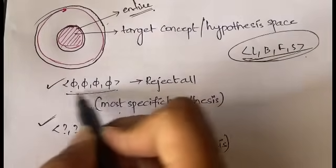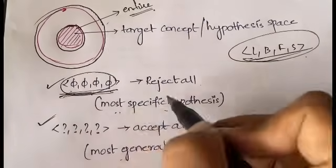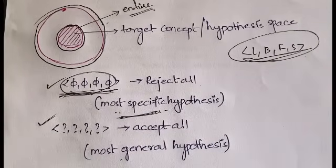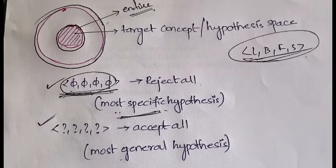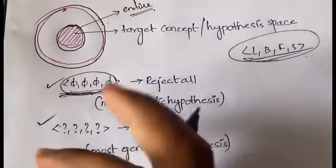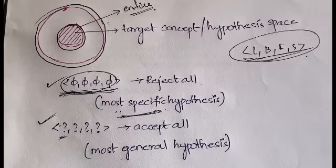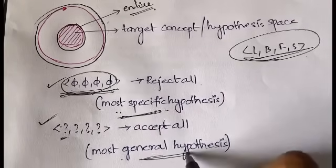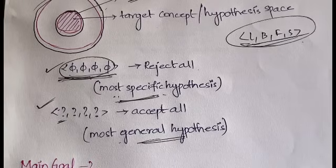If all features are represented with the null symbol (phi), then you reject all of them — this is called the most specific hypothesis, meaning you reject every feature no matter how good or bad it is. If everything is represented with a question mark, it means you accept anything — whether good or bad — irrespective of consequence. This is called the most general hypothesis. Rejecting everything is most specific; accepting everything is most general.